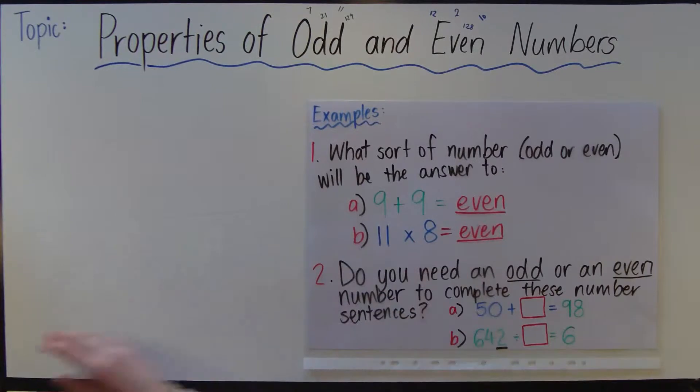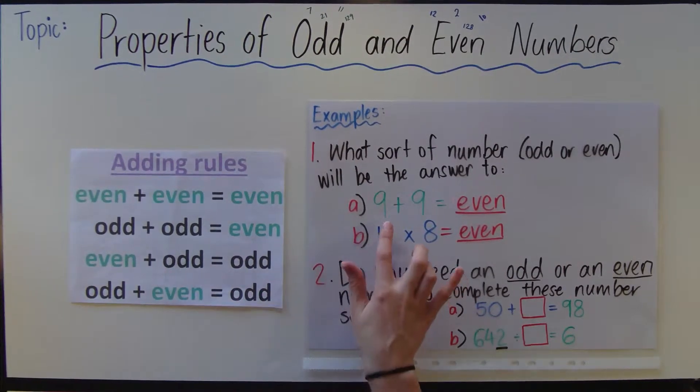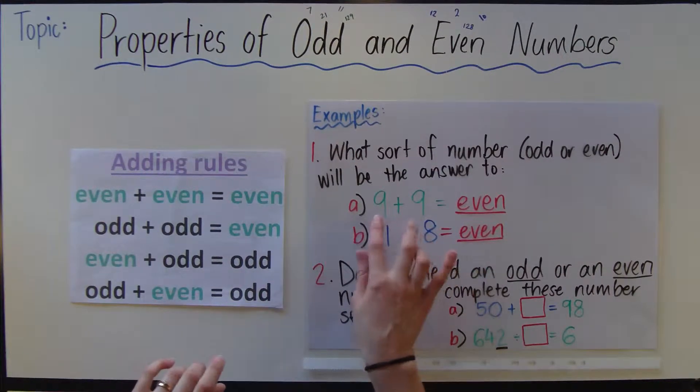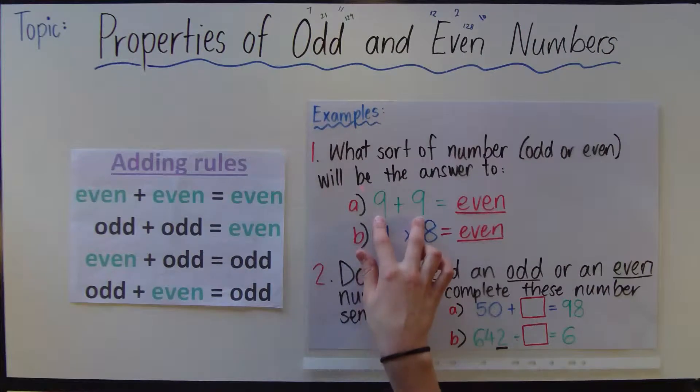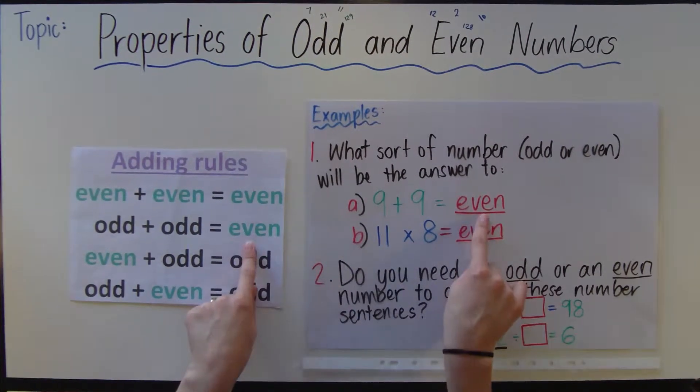We can look over here and we find the adding rules. This is even, and I'll show you why. You need to look at the 9 plus 9, and they're both odd numbers because when you divide 9 by 2 it equals an uneven number, so it's an odd number. So we're looking for 2 odds equals an even number.